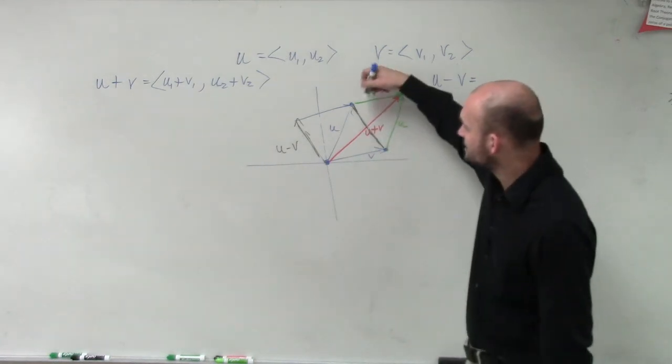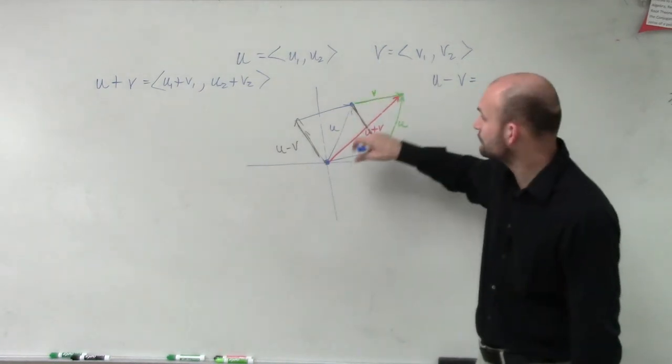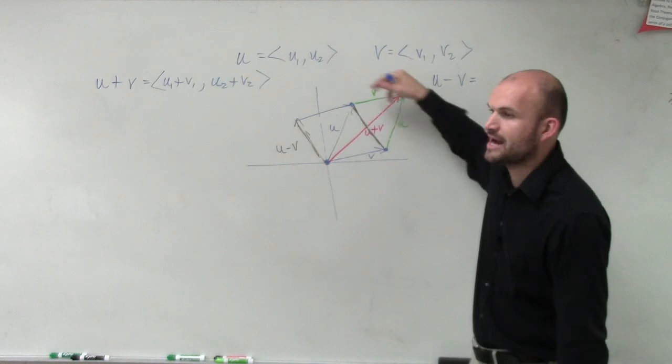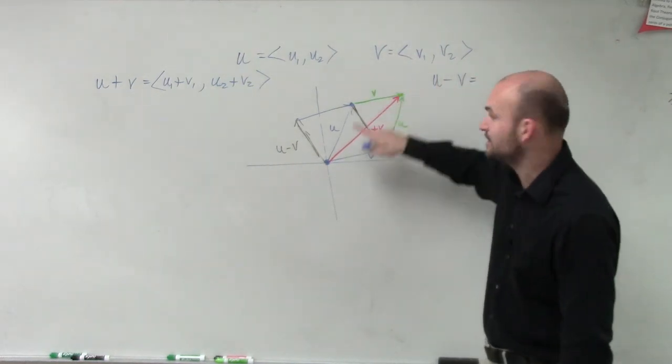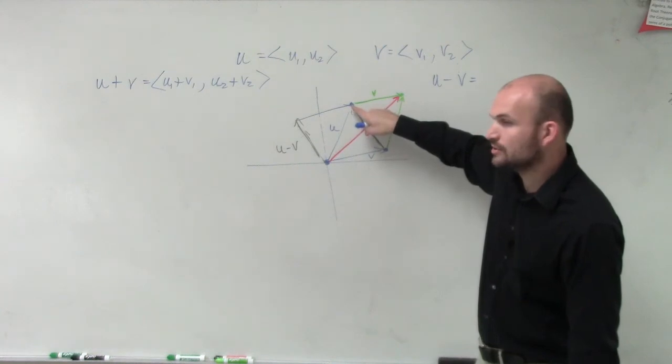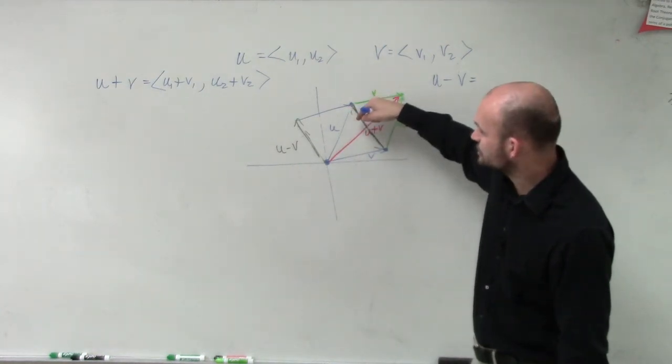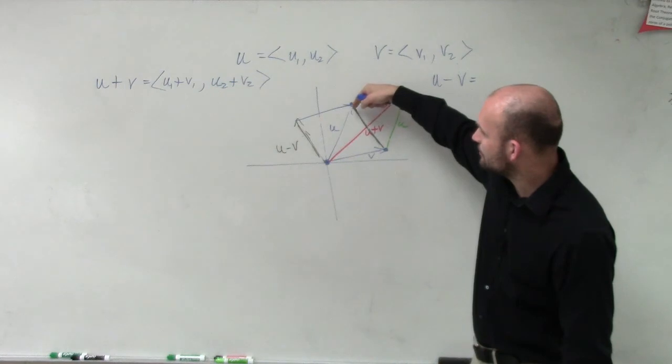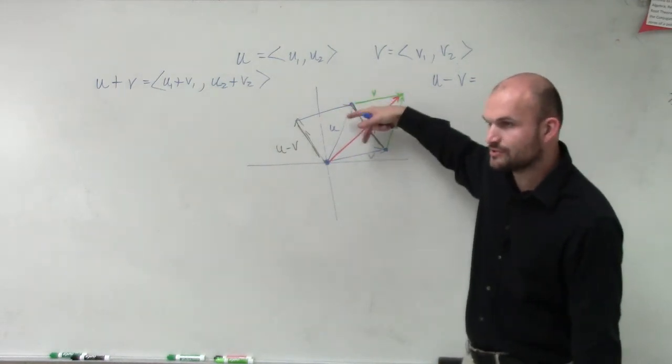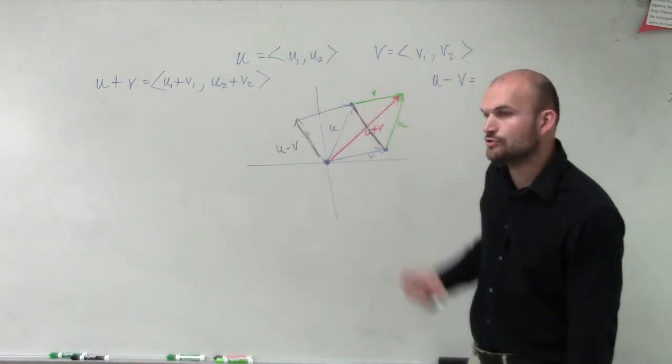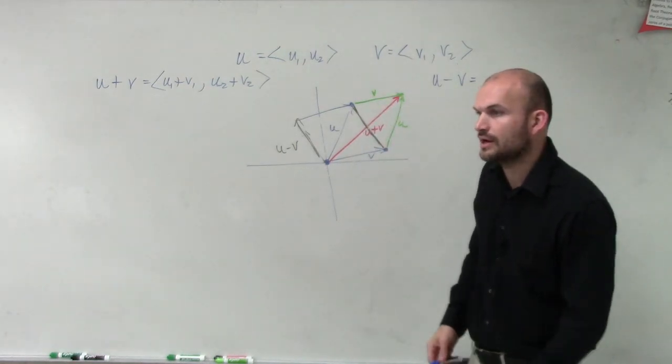If you have your u minus your v, when you take your u plus your v, you're taking one term, and it doesn't matter if you add both to each one, right? But if I'm going to say u minus v, you take your resultant u, and what you're going to do is you're just going to look at it from their two terminal ends, the difference between those two, that's going to be your u minus your v.